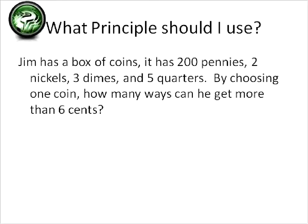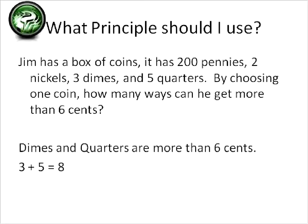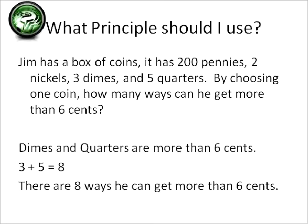Let's look at this question and decide which principle to use. Jim has a box of coins with 200 pennies, two nickels, three dimes, and five quarters. By choosing one coin, how many ways can he get more than six cents? That's going to be a sum question, because dimes and quarters are worth more than six cents. So I add together the three dimes and the five quarters — three and five is eight. There are eight options where Jim would pull out something worth more than six cents.